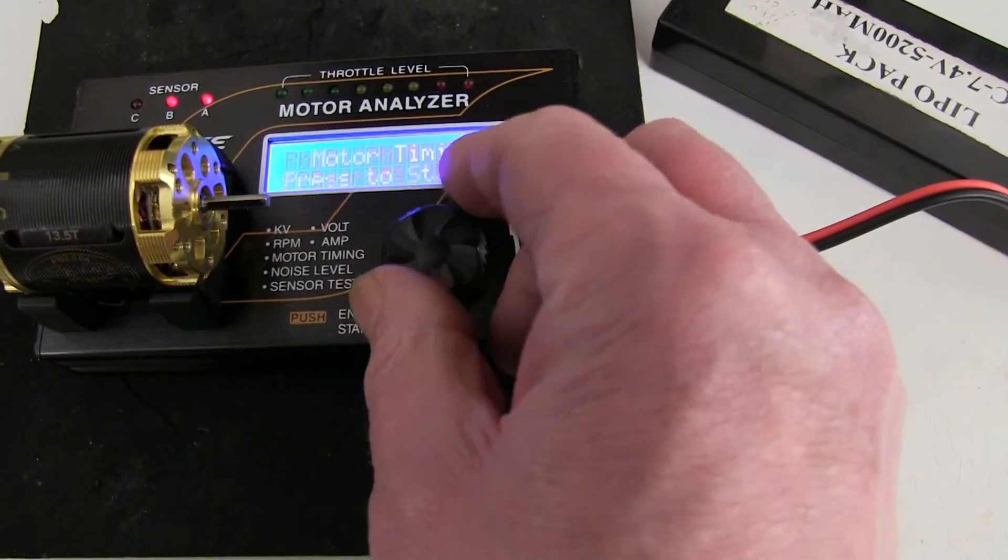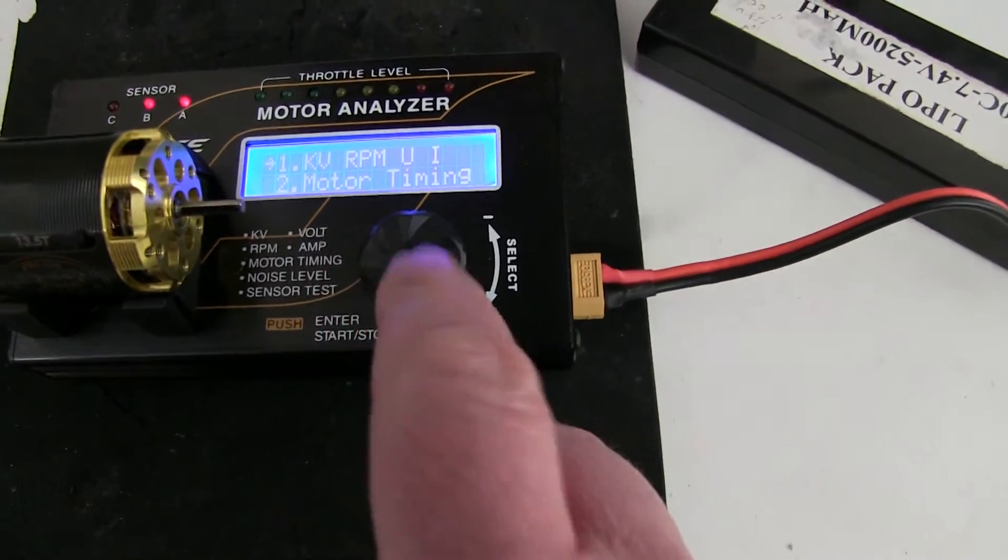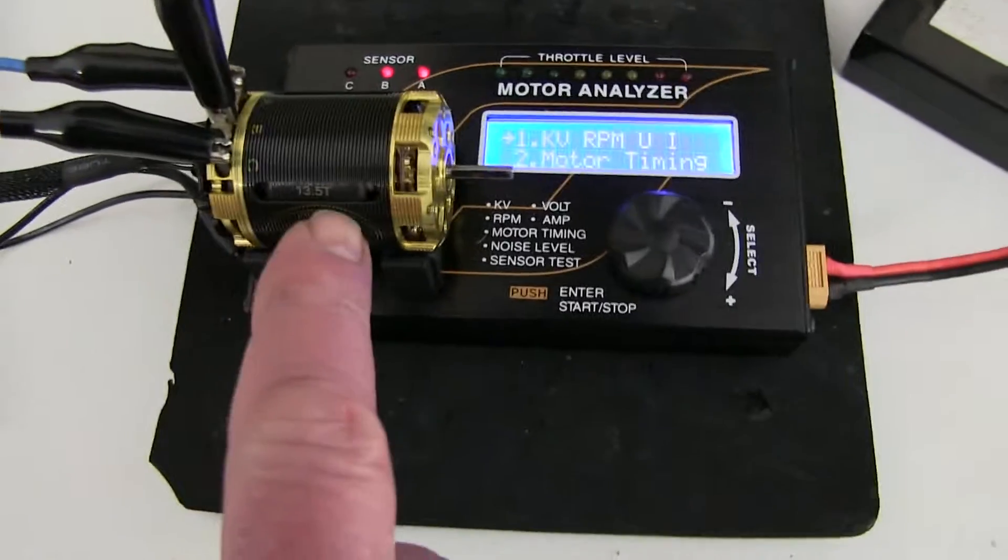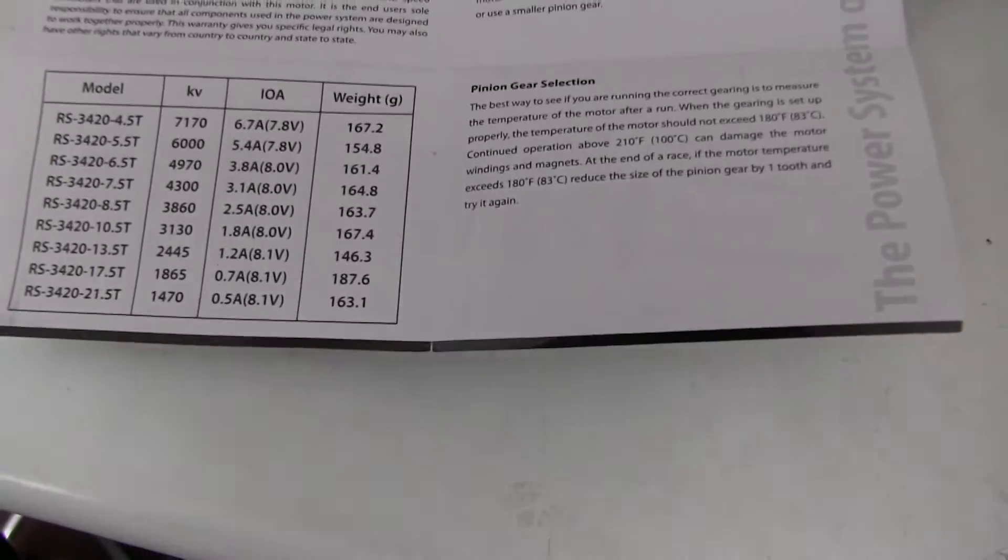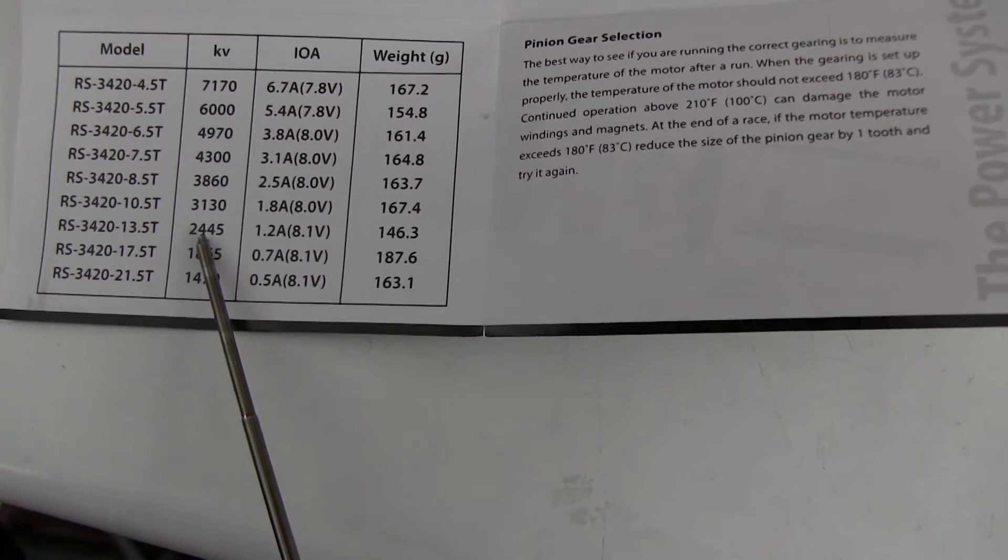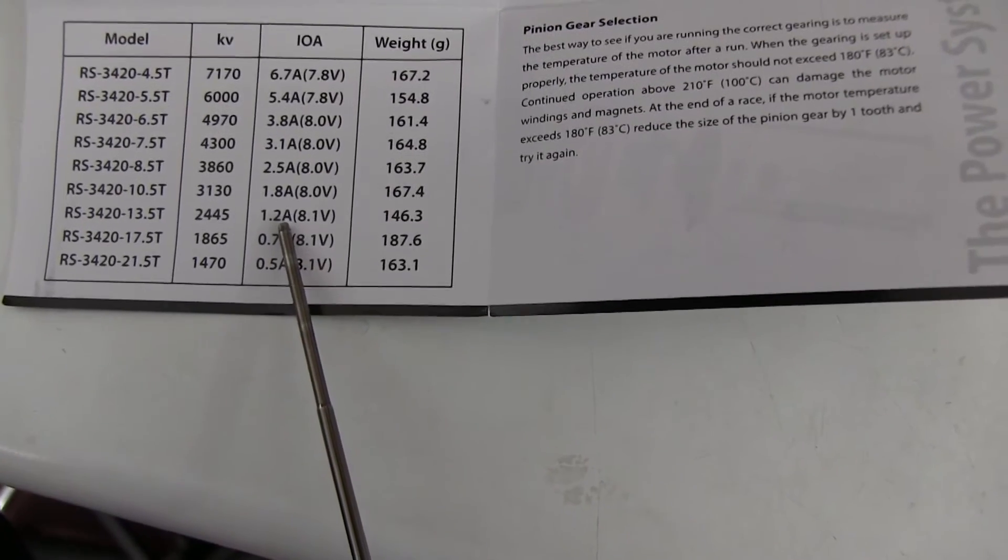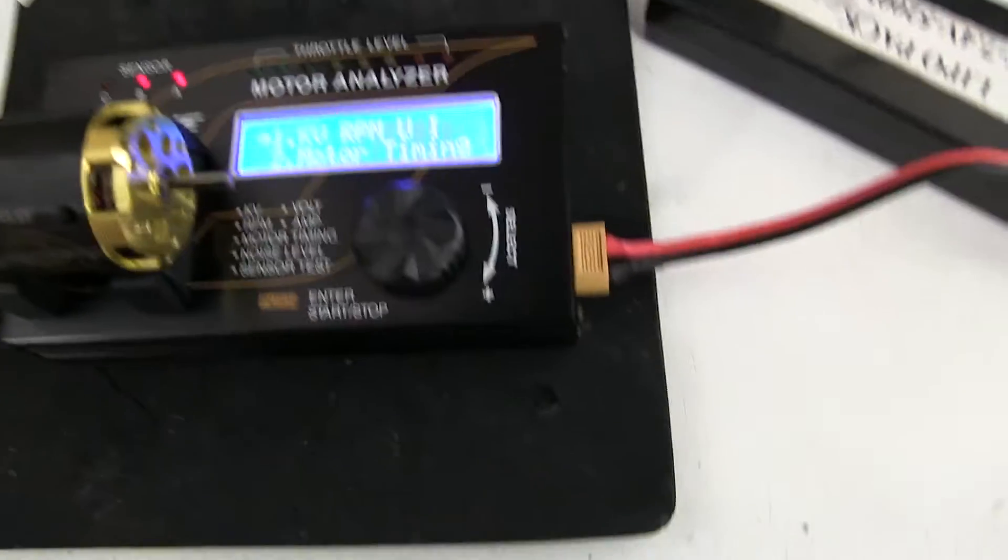Now, the other thing you can check is the KV rating. Now, this is a 13.5. And according to the book, on the 13.5, it's got a KV of 2445. It should draw 1.2 amps of load.